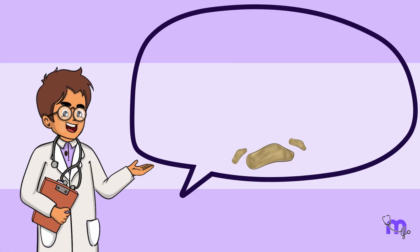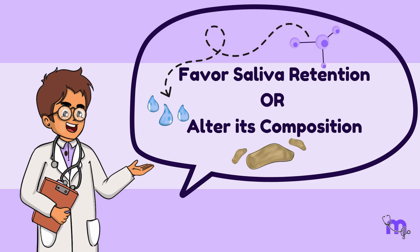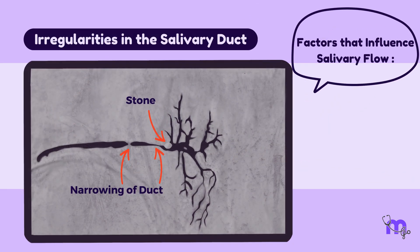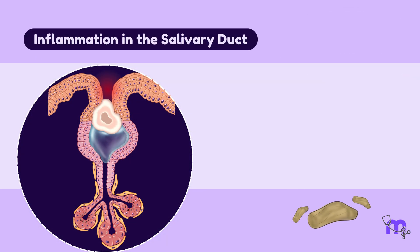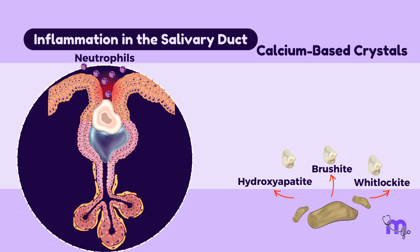Sialoliths can form due to several factors that either favor saliva retention or alter its composition. Irregularities in the salivary ducts and inflammation in the salivary duct causes neutrophils to rush into the duct. These then attract calcium-based crystals like hydroxyapatite, brushite, and whitlockite, which contribute to sialolith formation.